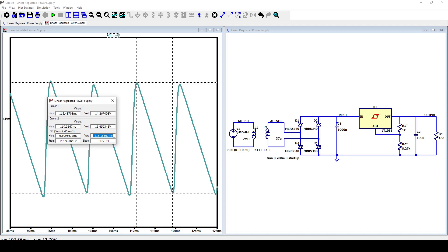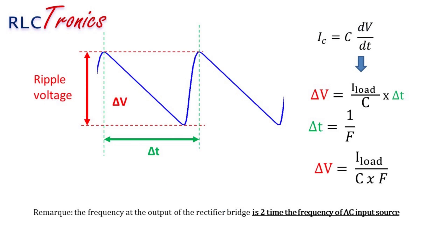In this case, the ripple voltage is around 800 millivolts peak to peak. The ripple voltage can be influenced by many parameters: the load current, the frequency of the input AC source, and the value of the bulk capacitor.